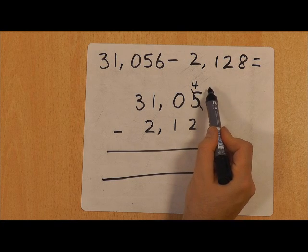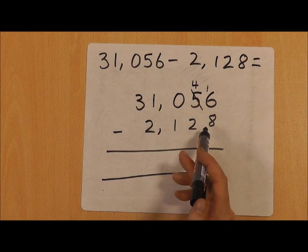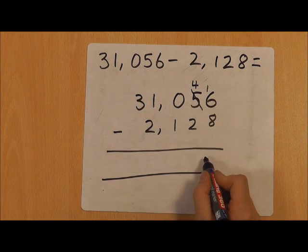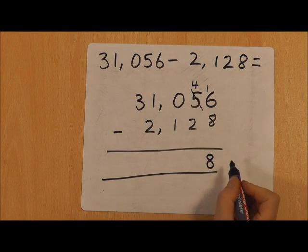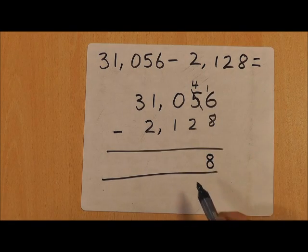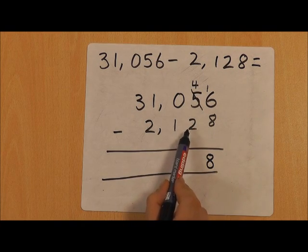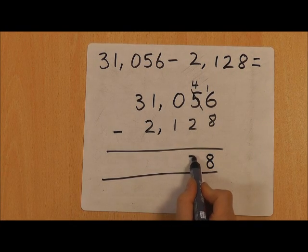We're going to put the 1 that we've just exchanged there, so now we're going to do 16 take away 8, which will give us 8. We can do that subtraction now because this number on top is bigger. We then go on to the next column and we're going to do 4 subtract 2, which gives us 2.